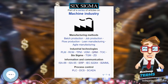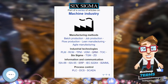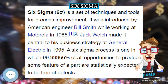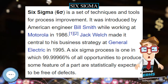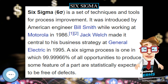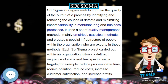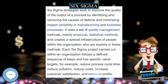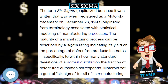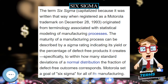Jack Welch made it central to his business strategy at General Electric in 1995. A Six Sigma process is one in which 99.999966% of all opportunities to produce some feature of a part are statistically expected to be free of defects.